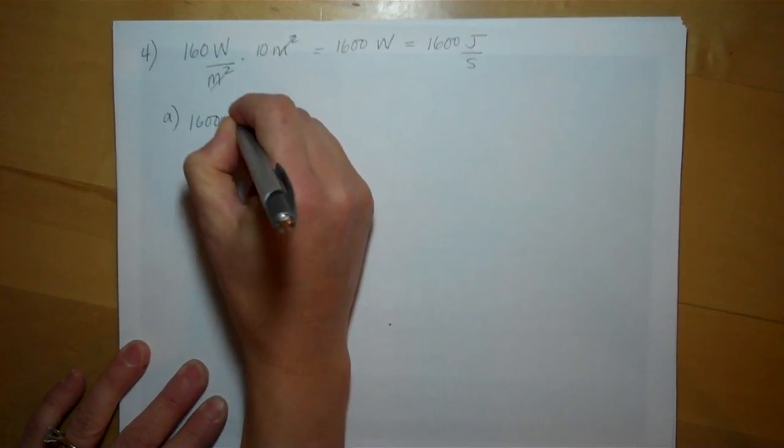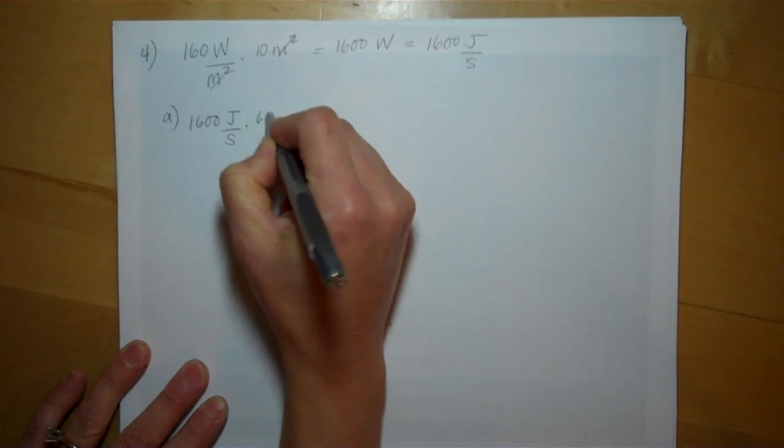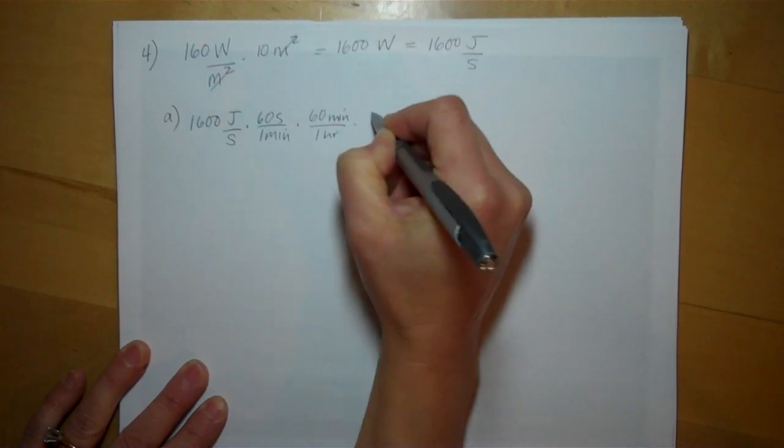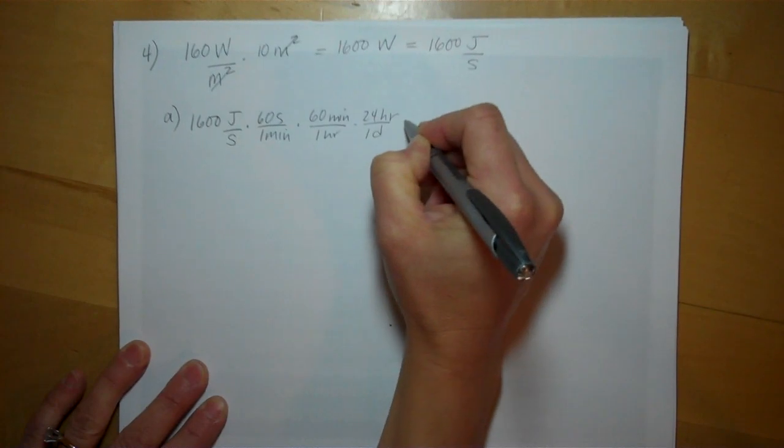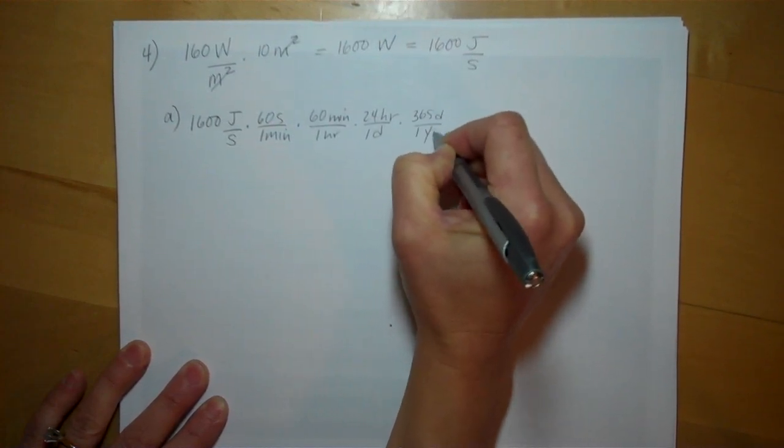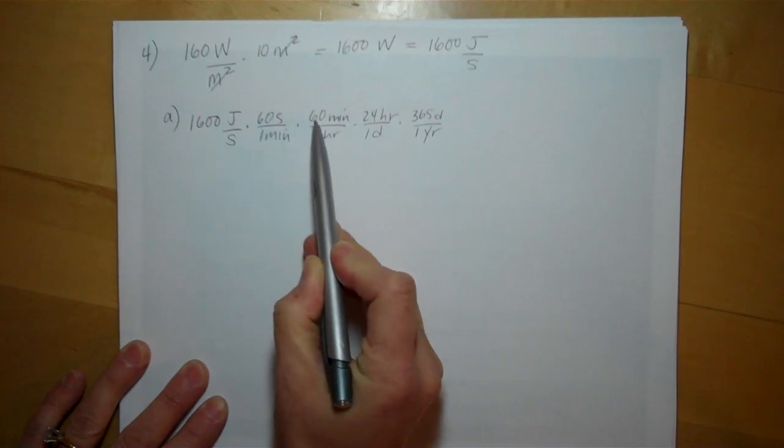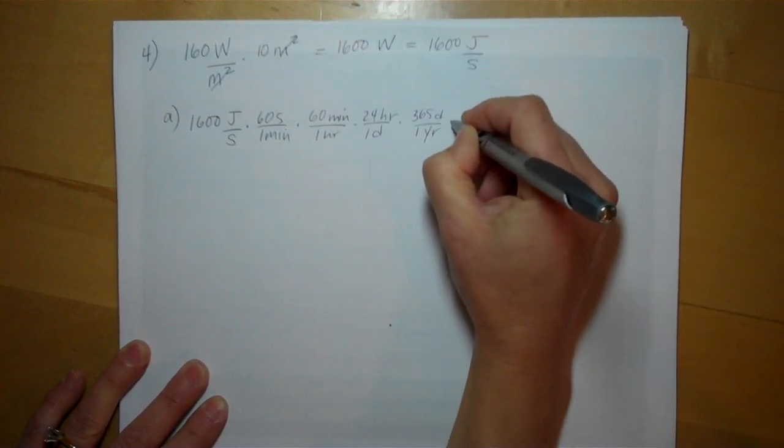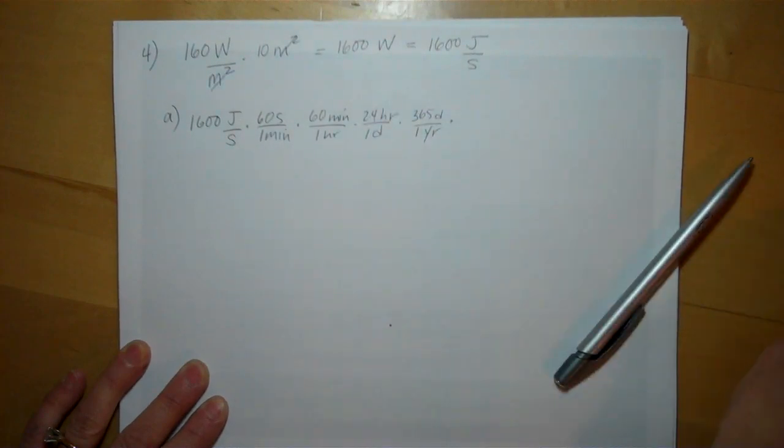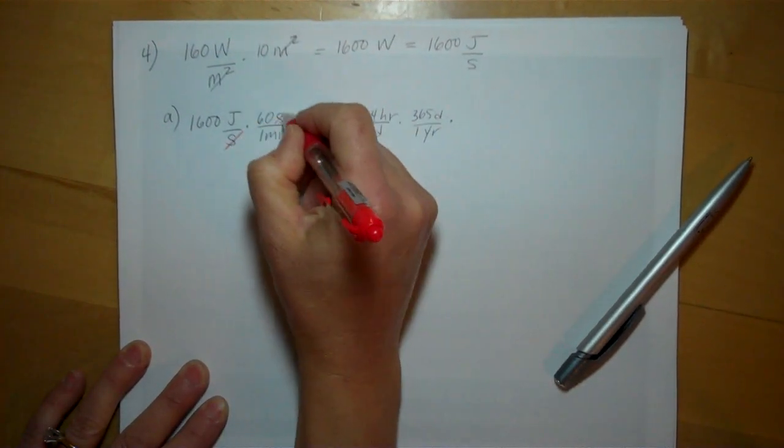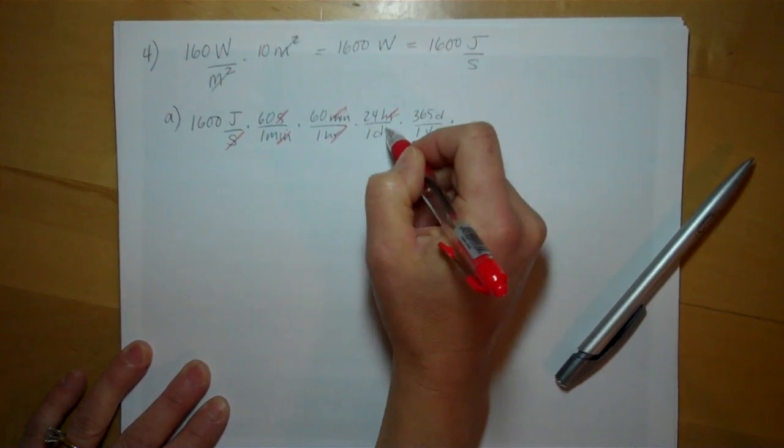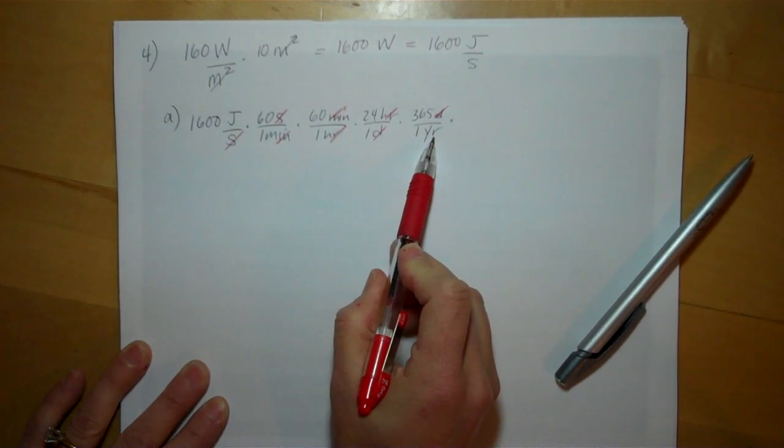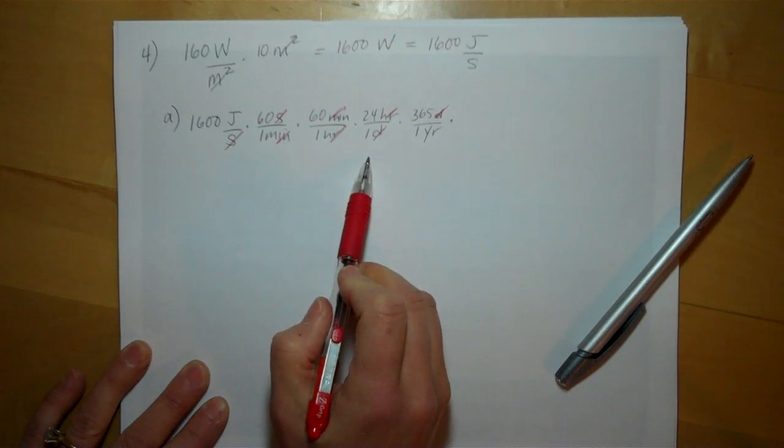If we're producing 1600 joules per second, and there's 60 seconds in a minute and 60 minutes in an hour and 24 hours in a day and 365 days in a year, you could combine this. Seconds would cancel out, minutes would cancel out, hours would cancel out, days would cancel out. We would now know joules per year, but we don't want joules per year—it wants us to know BTUs.